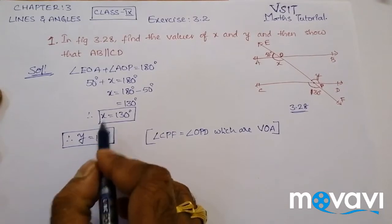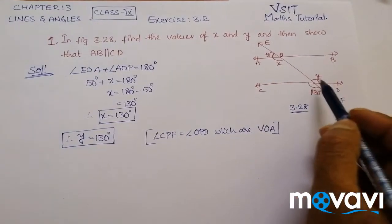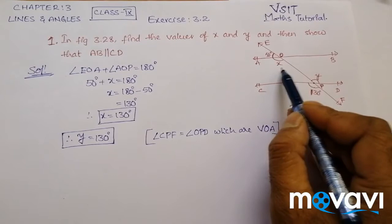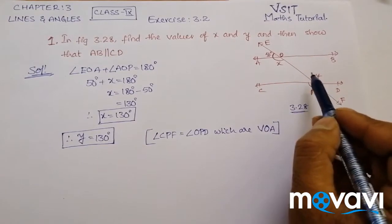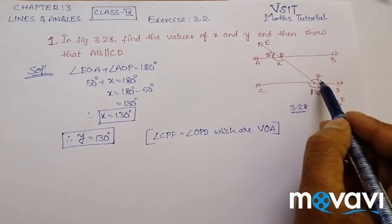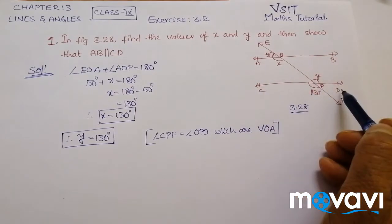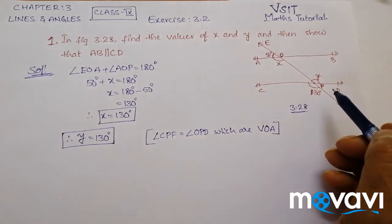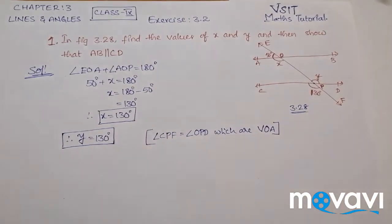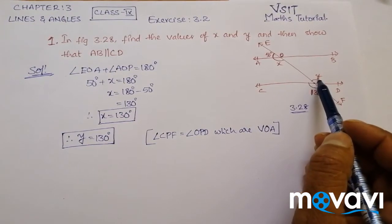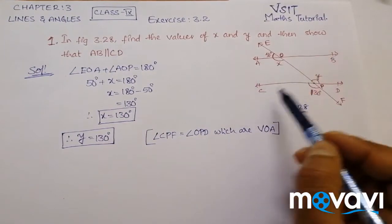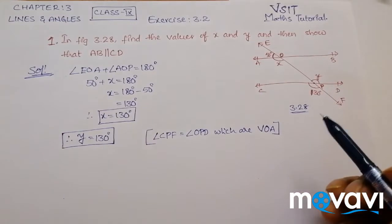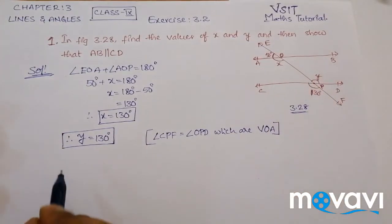Both X and Y are interior alternate angles and are equal. Then surely AB and CD are parallel. We know that if two lines are parallel and there is a transversal, then the interior alternate angles will be equal. Here X and Y are interior alternate angles, therefore AB and CD are parallel.